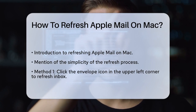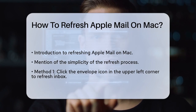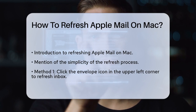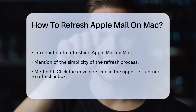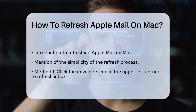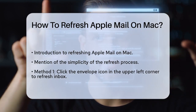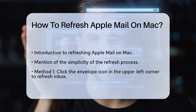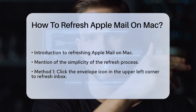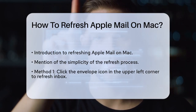To start, you can use the envelope icon. Open the Mail app on your Mac and look for the small envelope icon in the upper left-hand corner of the screen next to the Draft button. Clicking this icon will refresh your inbox and check for new emails in all your linked accounts.